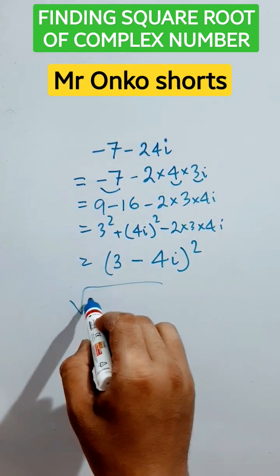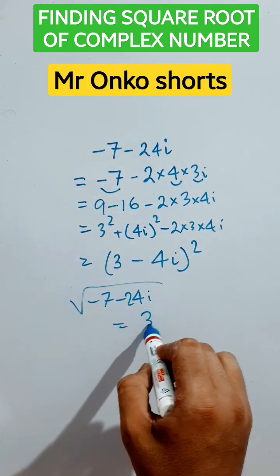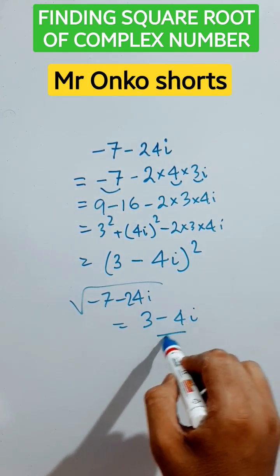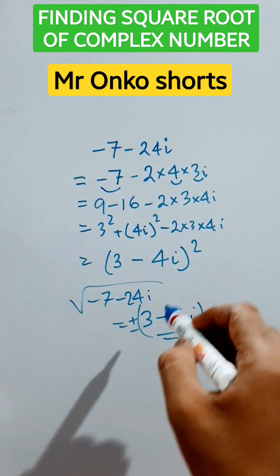So the square root of the number, that is square root of minus 7 minus 24i, is equals to 3 minus 4i plus minus. That's the answer. Now using this logic.